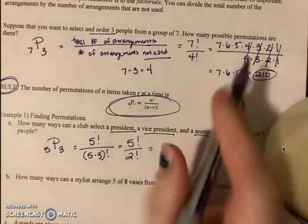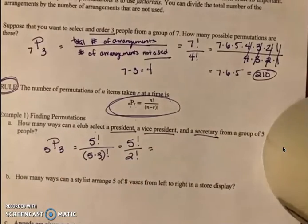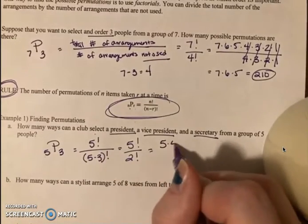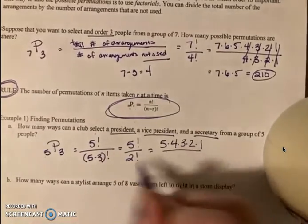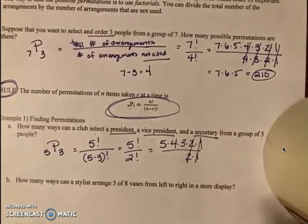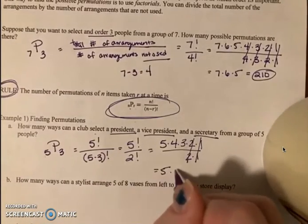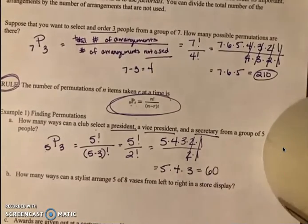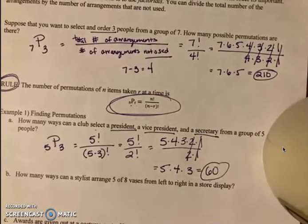We're going to expand the factorials so we can solve. Five factorial is 5 times 4 times 3 times 2 times 1. Two factorial is 2 times 1. So the twos are gone, the ones are gone. We're left with 5 times 4 times 3, or 60. There are 60 different ways we could select a president, vice president, and secretary from five people.